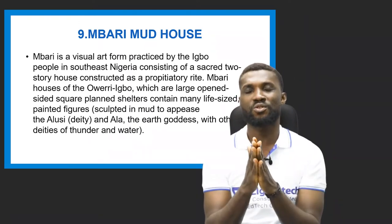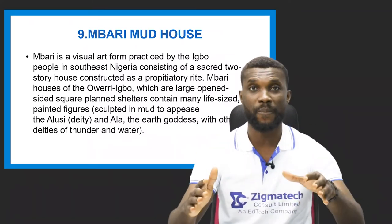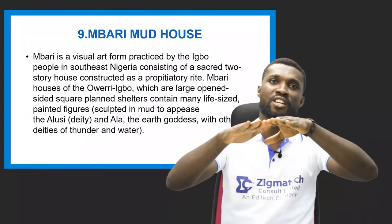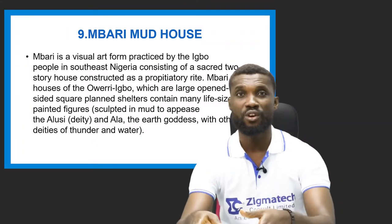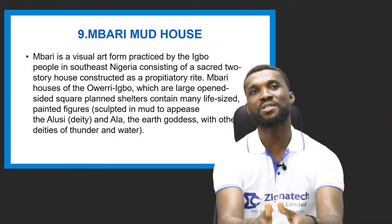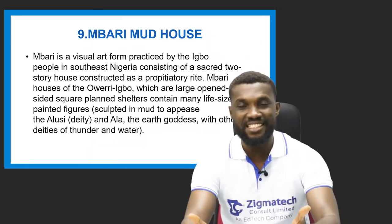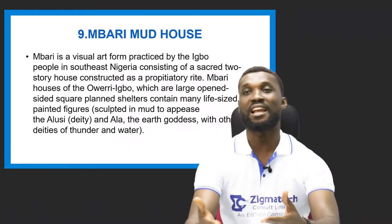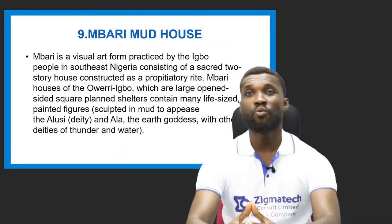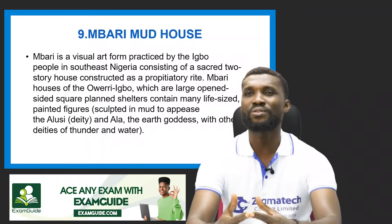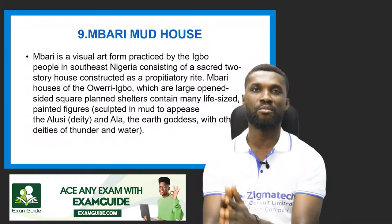The Mbari art is a two-story building — sometimes it might not be two-story, it could just be a leveled building — built for the Ala. The Ala is known as the God of the land; it is a deity, also called Allah. The earth goddess Ala, along with deities of thunder and water, is housed in the Mbari Mud House. The Mbari Houses are made as a gift to Ala, as a way to acknowledge Ala's charitable and overreaching presence.